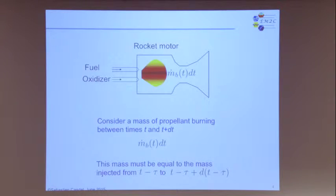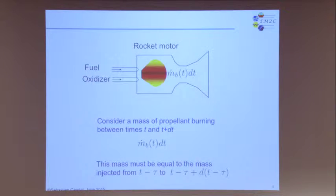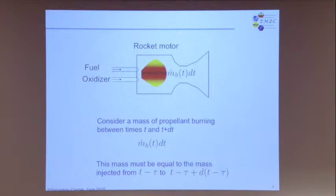Let's consider this rocket engine. It is fed with fuel and oxidizer. The principle is simple: you have a thrust chamber terminated by a nozzle. You introduce fuel and oxidizer inside this chamber, they react, and the hot gases are exhausted by the nozzle at high speed — and like that you have momentum and the rocket takes off.